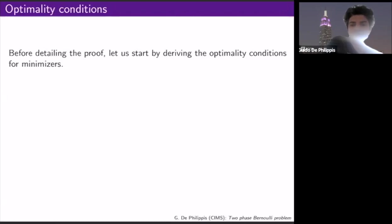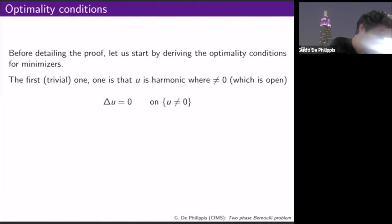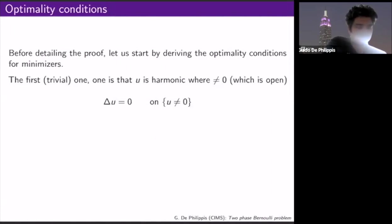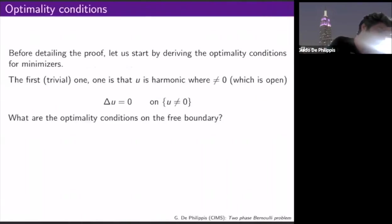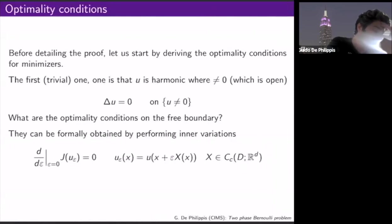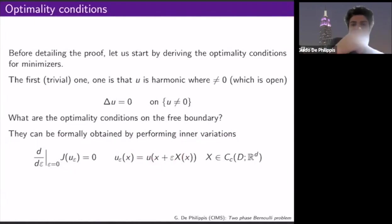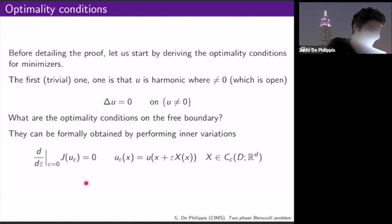The first optimality condition is trivial: the function wants to be harmonic where it's non-zero. Where it's non-zero is an open set, and inner variations there don't change the positive/negative sets. But this is very weak information telling you nothing about the free boundary. To understand something about the free boundary, you need to move it using inner variations — composing the function with a diffeomorphism flow and imposing stationarity.